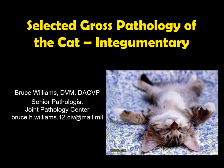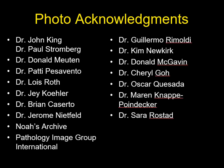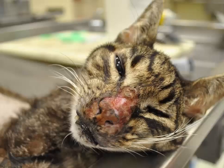Hello, it's Bruce Williams again. Today I want to present part five of my series on the selected gross pathology of the cat. We're going to talk about the skin. Skin is a great example of why I call these lectures 'selected gross pathology' — the lecture is not designed to be encyclopedic, but simply to illustrate some important diseases and show pictures of lesions of the skin of cats. I want to thank my friends and colleagues who have provided such wonderful images.